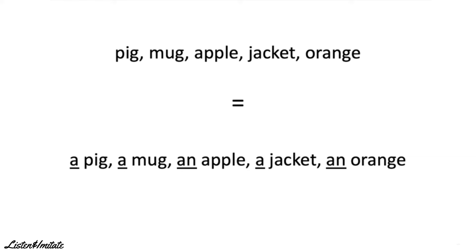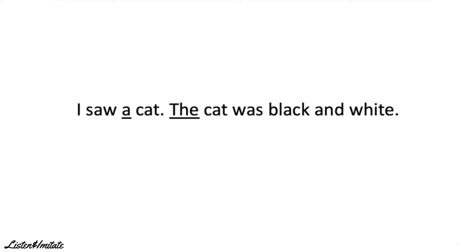We use an indefinite article to talk about something for the first time. Often, we use an indefinite article first, then follow it with the definite article 'the'. For example: I saw a cat. The cat was black and white. In the first sentence, we mention the cat for the first time — the listener might not know what cat I am referring to. In the second sentence, we mention the cat for the second time, therefore we can use the definite article 'the'.